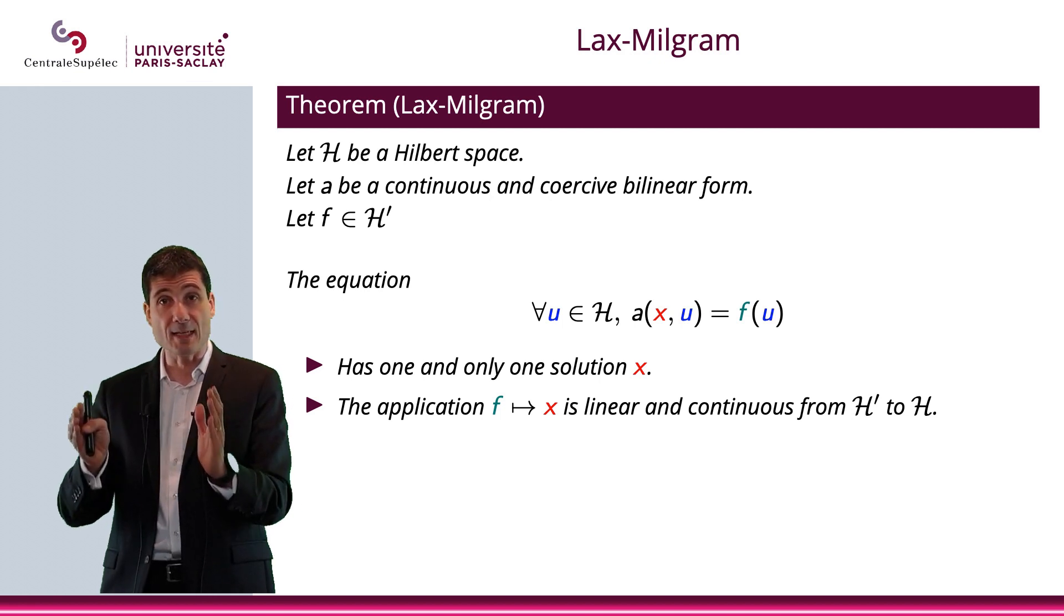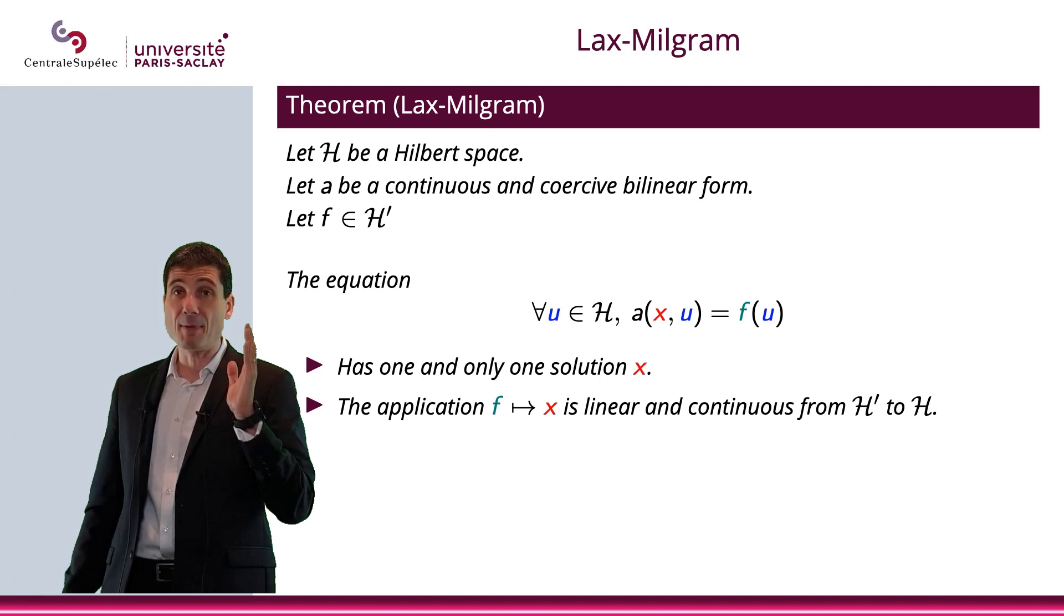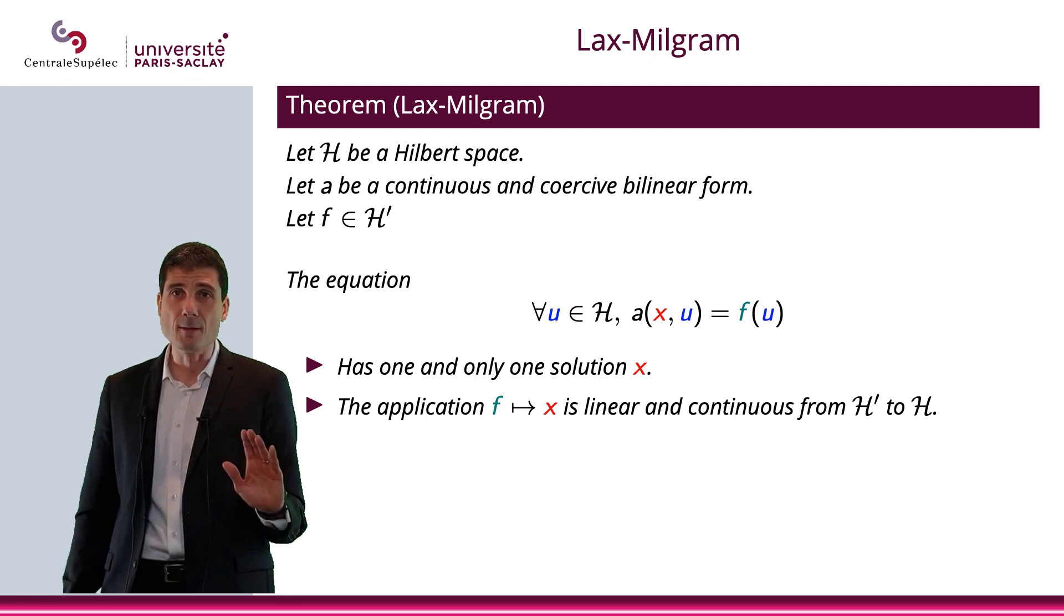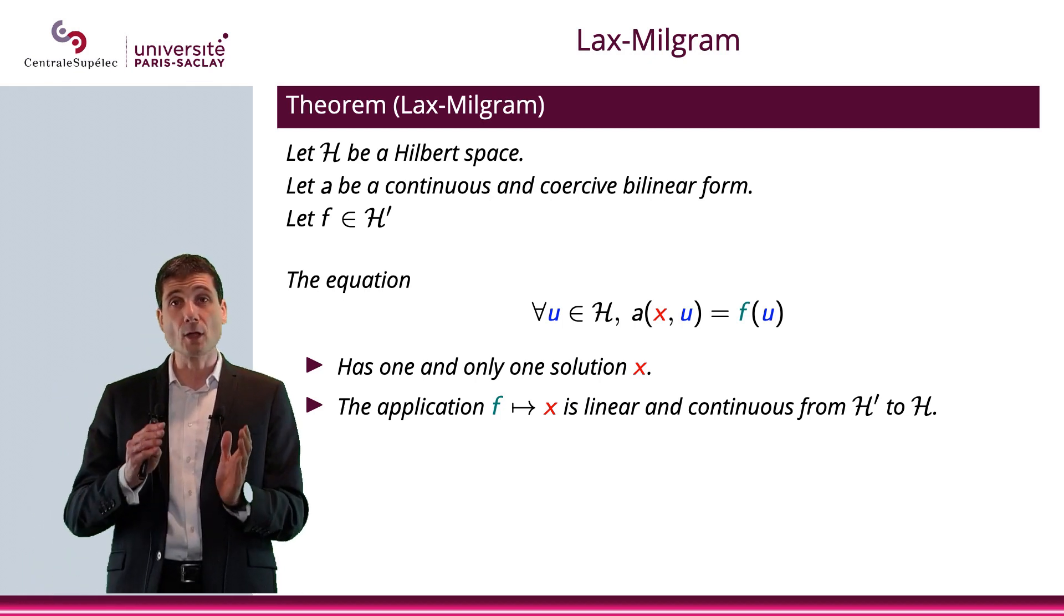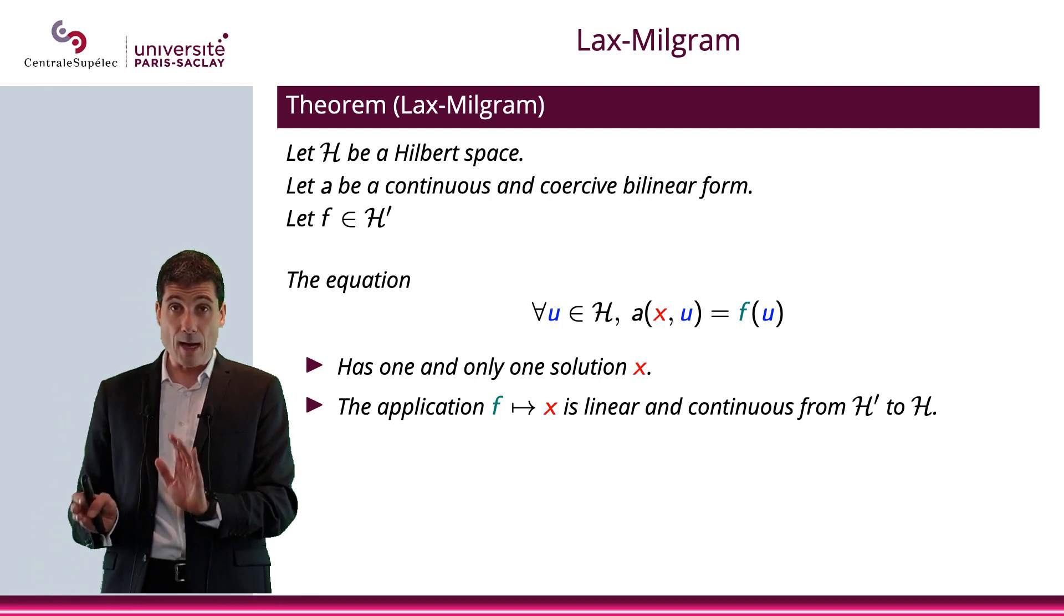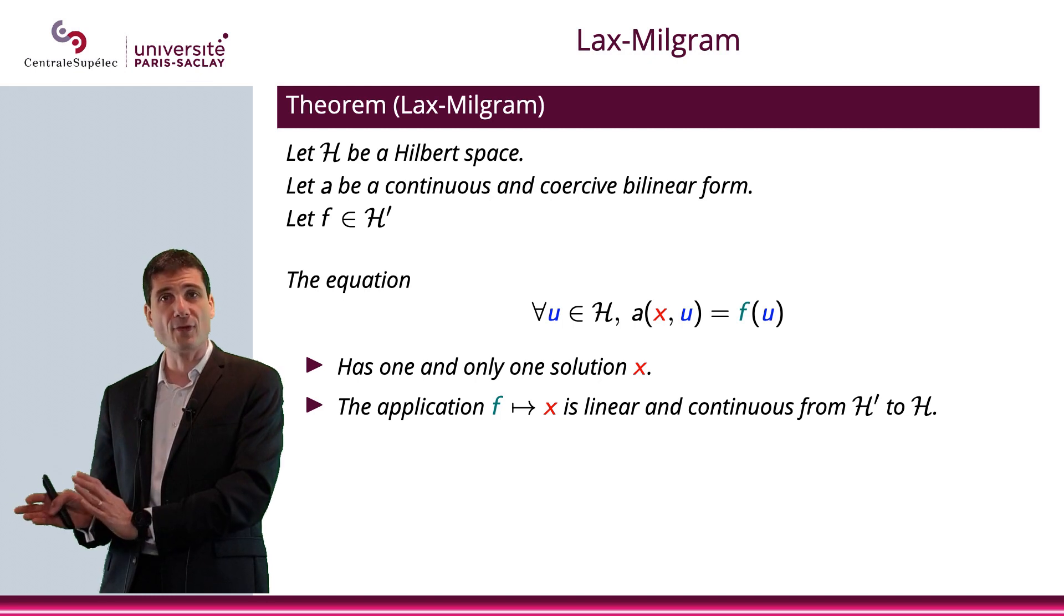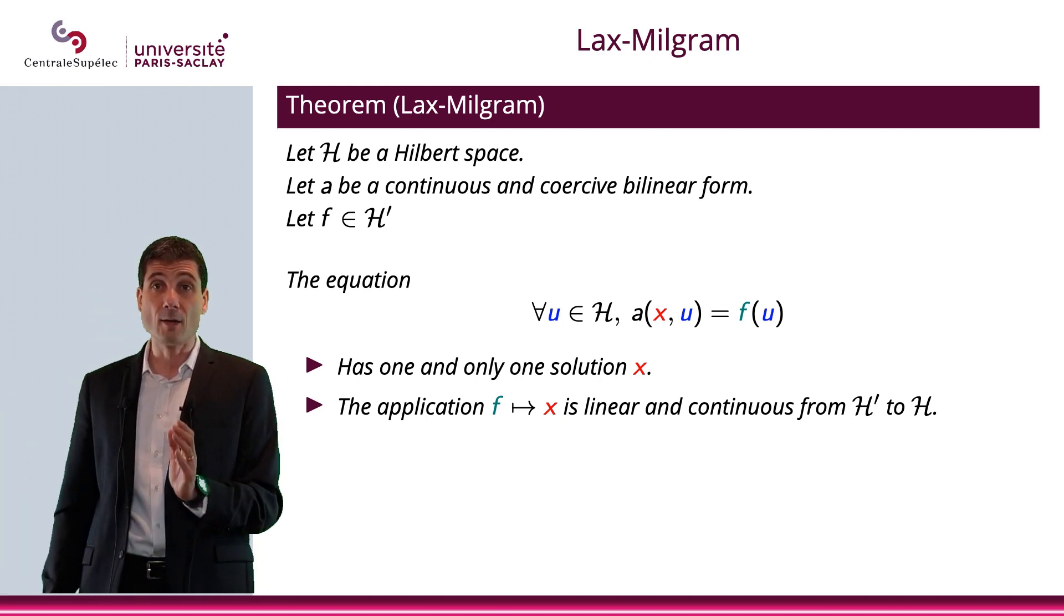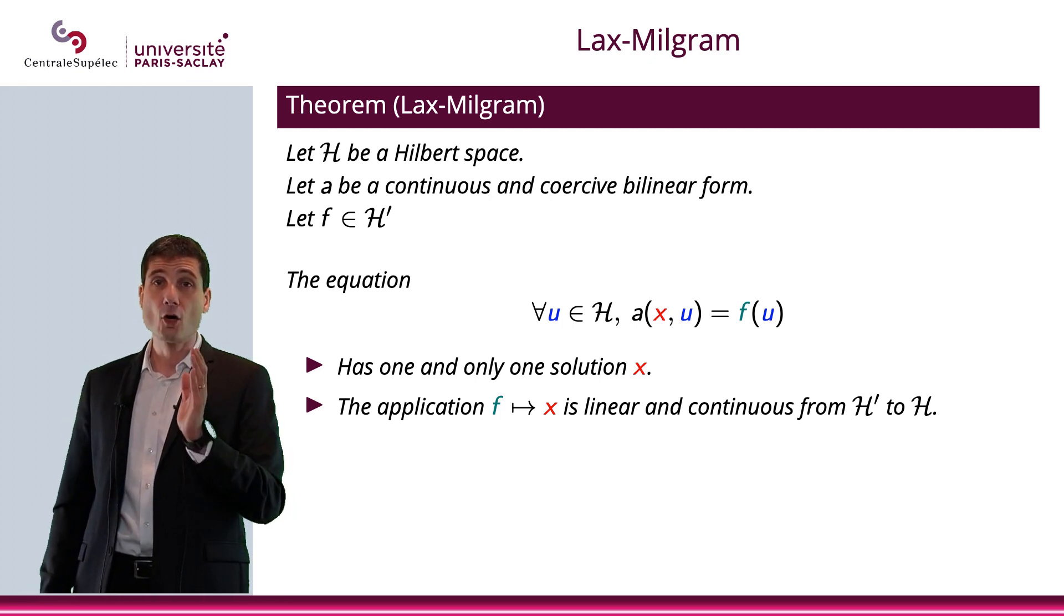Now, the proof of this theorem is actually provided on the website, so you can read it. Basically, you have two versions. You have the version where A is symmetric, and the proof is very easy. And you have the situation where A is not symmetric, where the proof is a little bit more complicated. I'm not saying that you need A to be symmetric. I'm just saying that in the case A is symmetric, the proof is easier. But of course, we have not required A to be symmetric in this theorem. All we are requiring is A to be continuous and coercive.